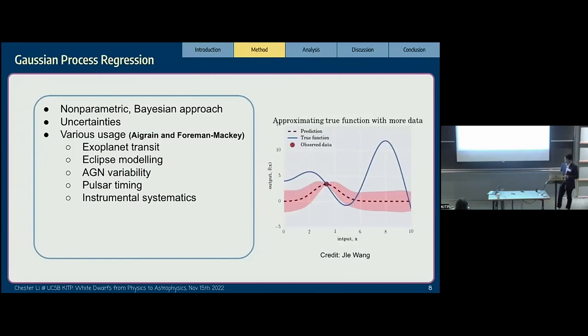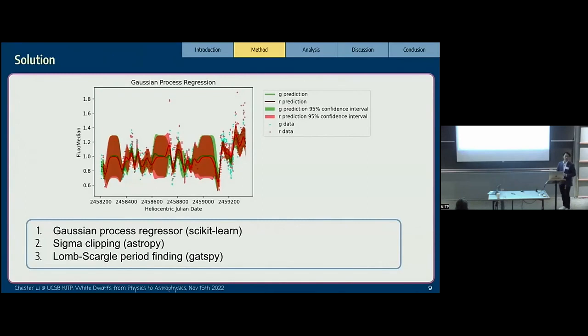This is how we apply Gaussian process regression to the light curve. The solid red and green lines are the predictions made by Gaussian process regression, and we got 95% confidence intervals from the algorithm. We first apply GPR to normalize the data. After that, we use sigma clipping to remove outliers. Finally, we run the Lomb-Scargle multiband to find the period. Gaussian process regression did a pretty good job modeling this chaotic CV light curve.